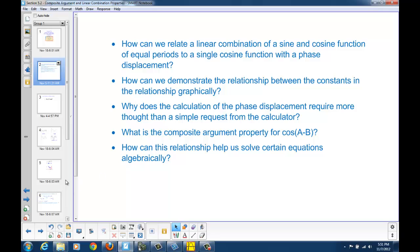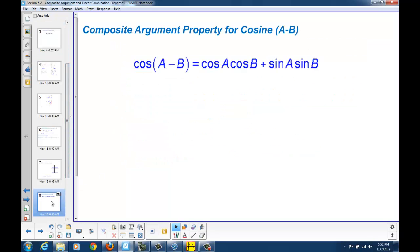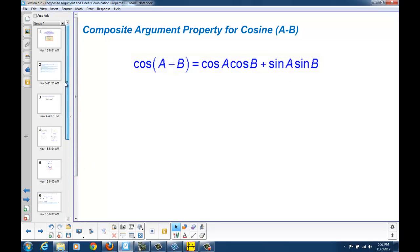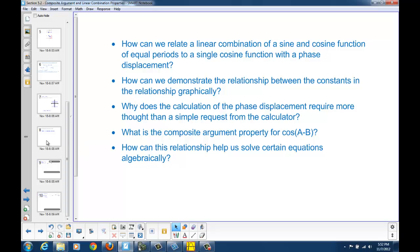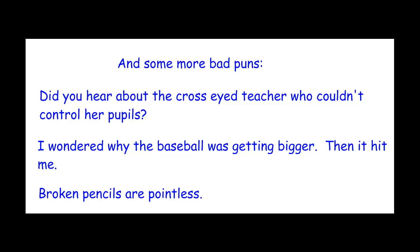The composite argument property for cosine of A minus B is: cos(A − B) = cos(A)·cos(B) + sin(A)·sin(B). This relationship helps us solve certain equations algebraically by converting a linear combination into a single cosine with a phase displacement, allowing us to then take advantage of the arc cosine definition and solve as demonstrated.